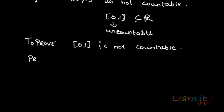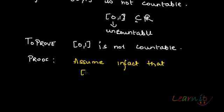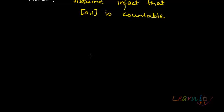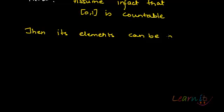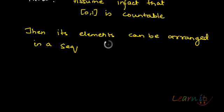Proof by contradiction. Let us assume that (0, 1) is countable. If that is the case, then we can arrange its elements in a sequence like a_n where n is greater than or equal to 1.